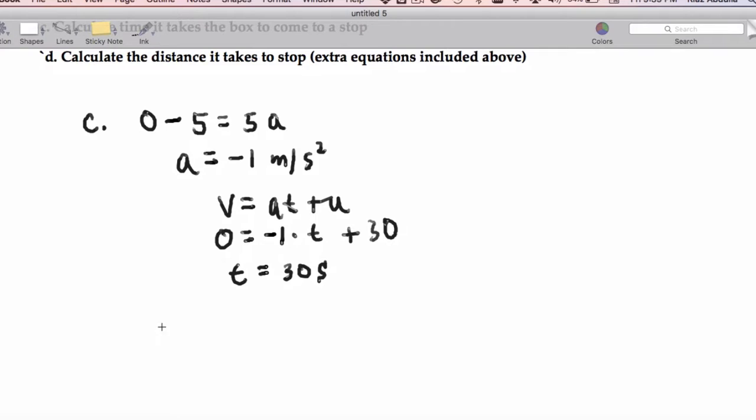Okay. Now let's use SUVAT to get the distance. So S equals 1 half AT squared plus U times T.